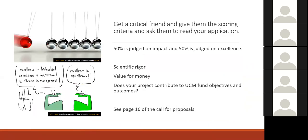Diane finds it really helpful to get a critical friend, give them the scoring criteria and her application ahead of time, and ask them to read it against the assessment criteria and give feedback. Fifty percent of the project is judged on impact and the other 50% on excellence — is there scientific rigor, is it good value for money for MB, does it contribute to the Curious Minds fund objectives? She goes back and reads the original Unlocking Curious Minds paper, available online. Page 16 in this year's call for proposals lists what's important and what it will be assessed against.